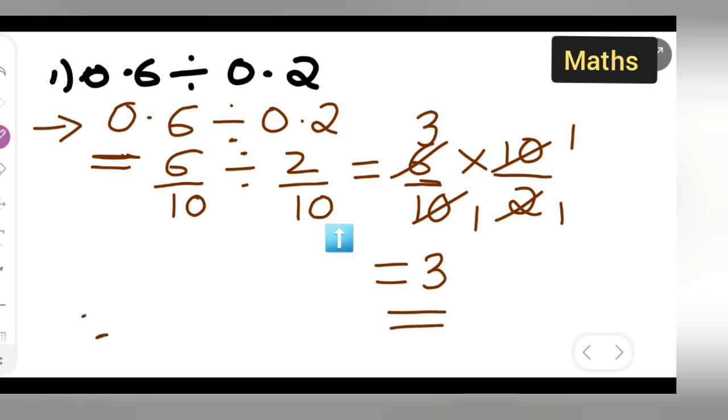Therefore, you all can say that 0.6 divided by 0.2 is equal to 3.